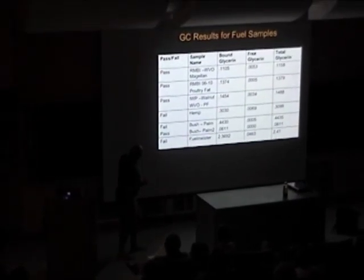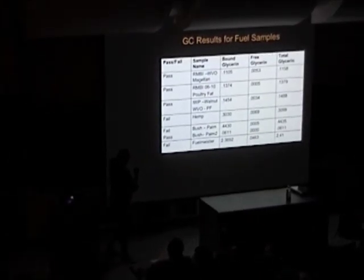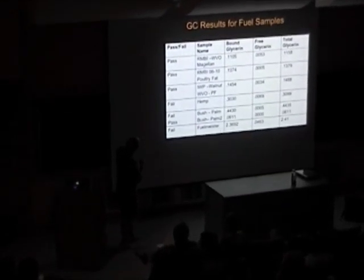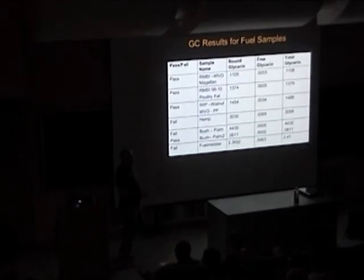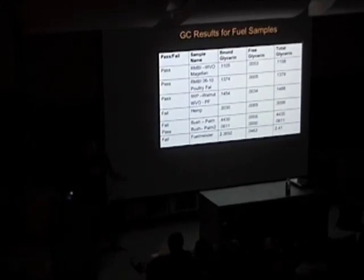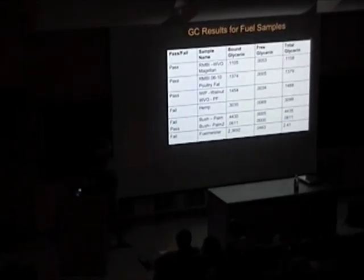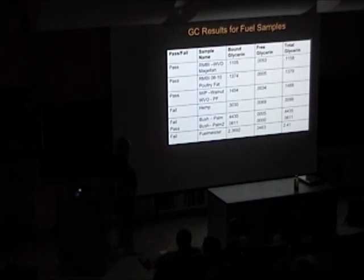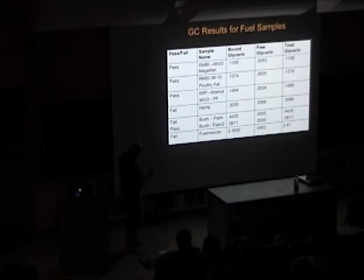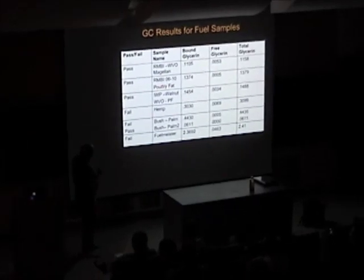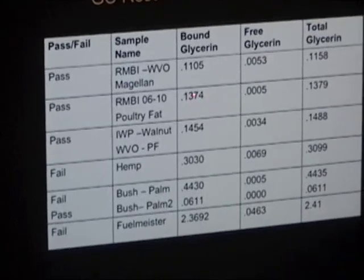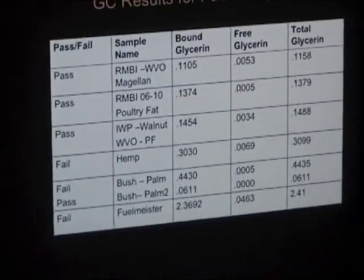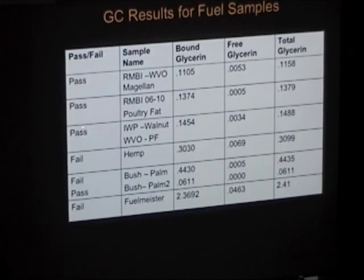These are the samples I have here today. The WVO sample — I call it my Magellan sample because I've had a full ASTM spec on it since April. It's a check sample. This is a poultry fat sample made from 100% poultry — primarily chicken, some turkey. Here's its bound, it's free, and it's in spec. So that's a pass on the GC.